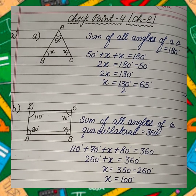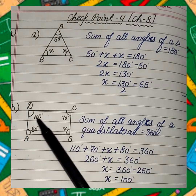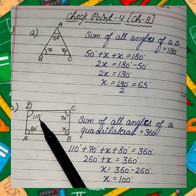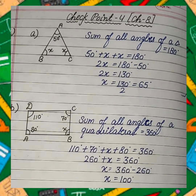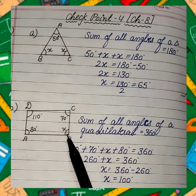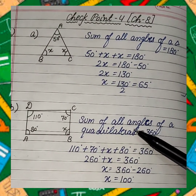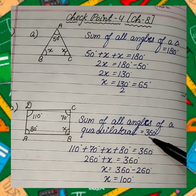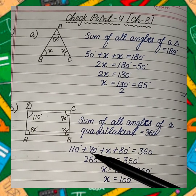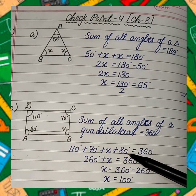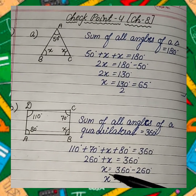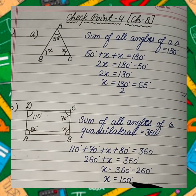Similarly, in part B, this is a quadrilateral — a four-sided figure — in which the measures of angle A, angle D, and angle C are given and we have to find the value of x, that means the measure of angle B. Since it is a quadrilateral, the sum of all angles will be 360 degrees. So we can write 110 degrees plus 70 degrees plus x plus 80 degrees equals 360 degrees. On solving this equation, we get the value of x, that is 100 degrees.